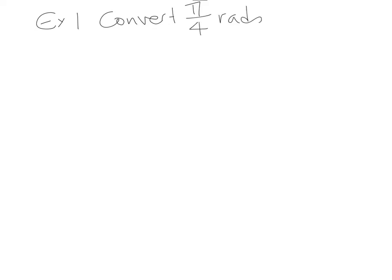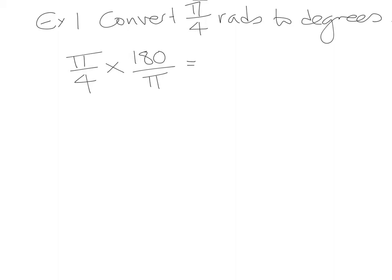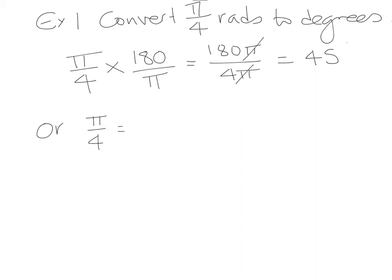Example 1: convert pi over 4 radians to degrees. Method one: pi over 4 times 180 over pi gives 180 pi over 4 pi — the pi's cancel and we get 180 divided by 4, which is 45 degrees. Method two: replace pi with 180, giving 180 divided by 4, which is 45. The second method is much simpler, and as long as there's a pi in the value, go with that.